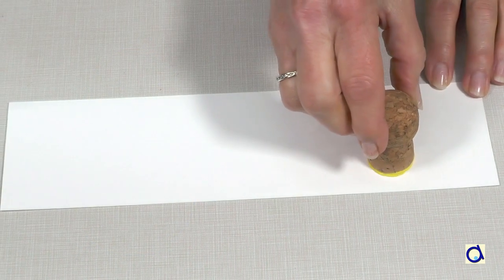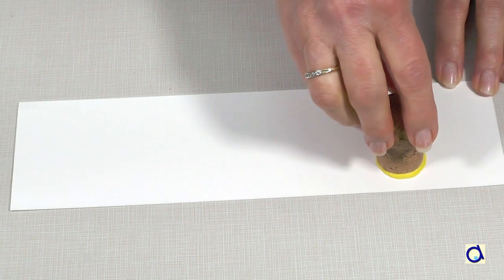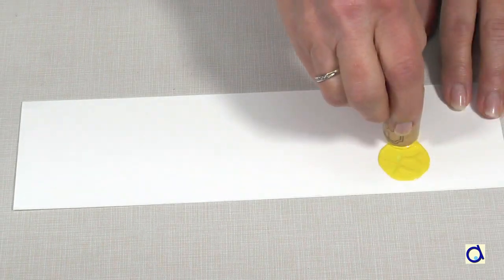Cut a strip of Bristol paper if you want to make a border with chicks to decorate the classroom, for example.